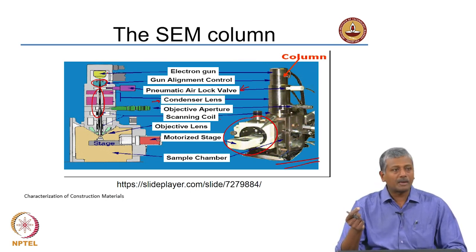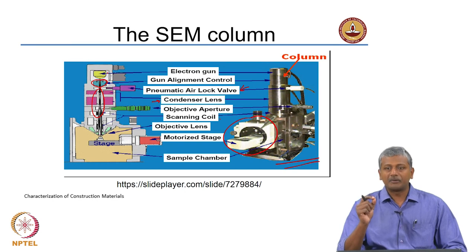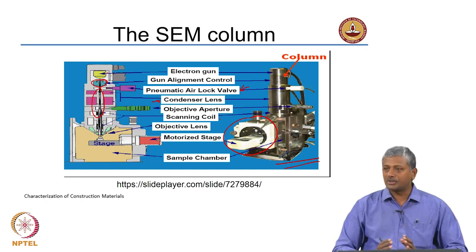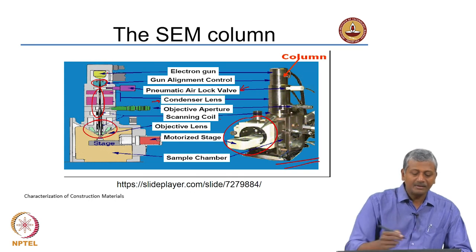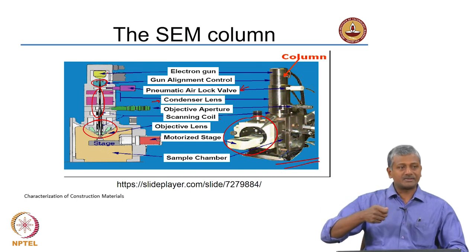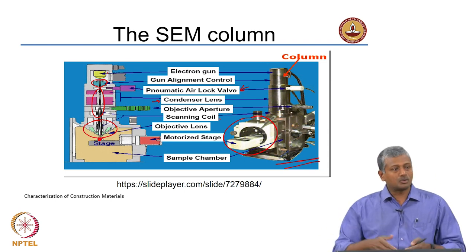Reducing the aperture improves resolution, but also reduces the intensity of the electron beam — so you must choose the right settings for your imaging system. Beyond the scanning coils, the objective lens system — an electromagnetic lens — focuses the electron beam right on the specimen. The focused electron beam should converge exactly on top of the specimen; that convergence point is your focus. You choose the right combination of aperture and objective lens settings based on what you need.